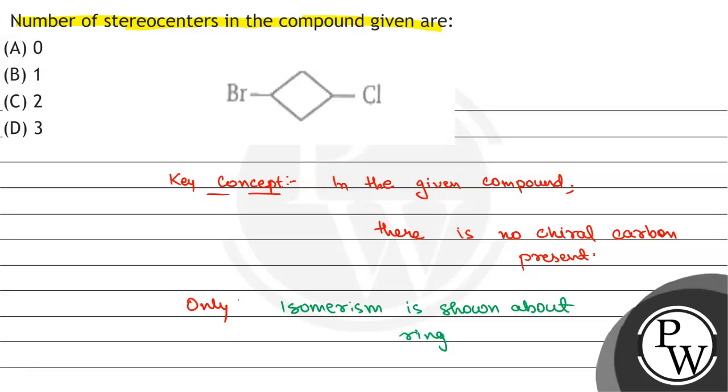So, the only stereocenter will be the ring. Therefore, the correct option will be option B, 1.